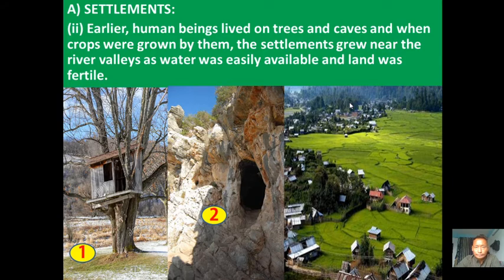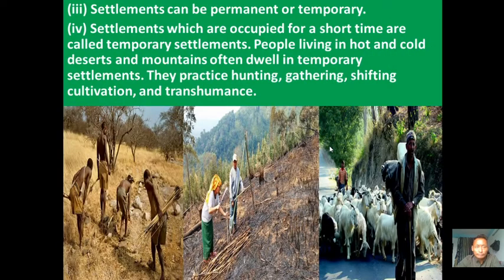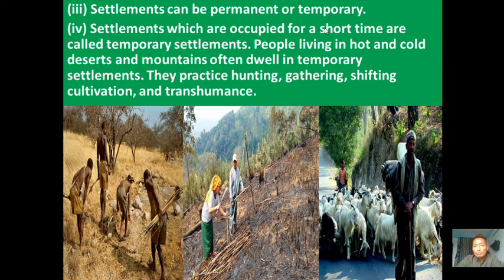Settlements can be permanent or temporary. In some places people build homes and stay for a very long time, even a lifetime. In other places people stay temporarily — for three to five years, or up to seven years — after which they move to another place. So settlements are of two types: permanent and temporary.